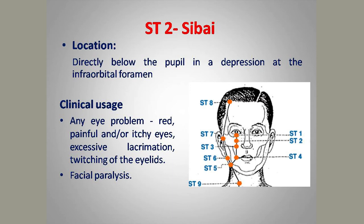Stomach 3, Juliao, is located lateral to the ala nasi, directly below the pupil. Its function is to remove excess wind and help in removing obstruction of the channel. It can be used for swelling of the eyes. Indications include facial paralysis, epistaxis (nose bleeding), and swelling of the lips and cheeks.